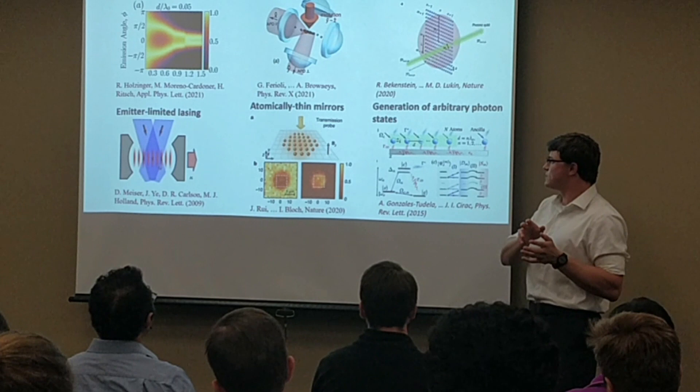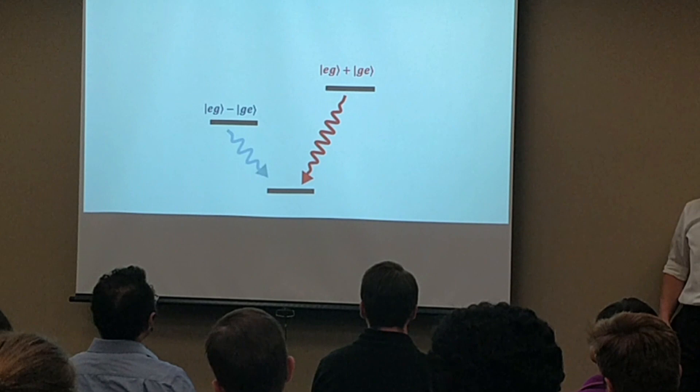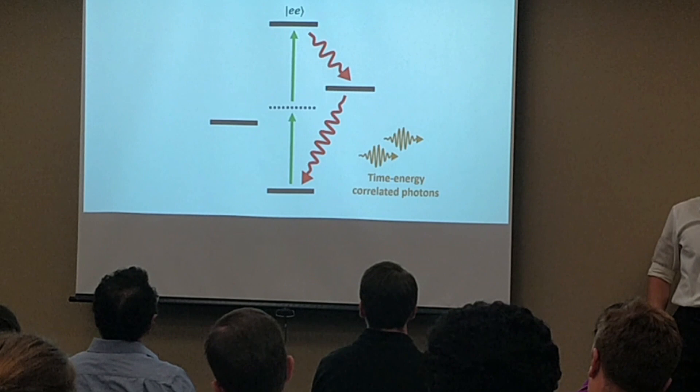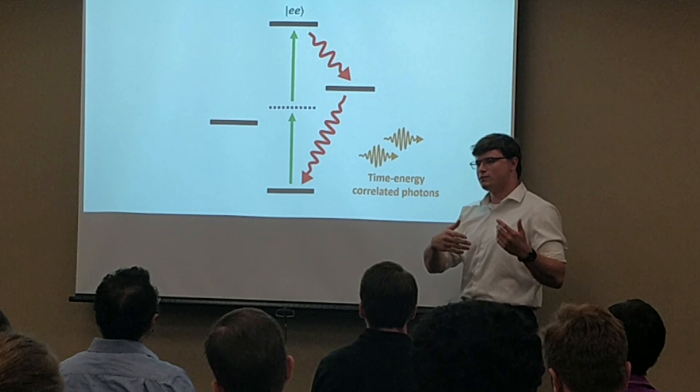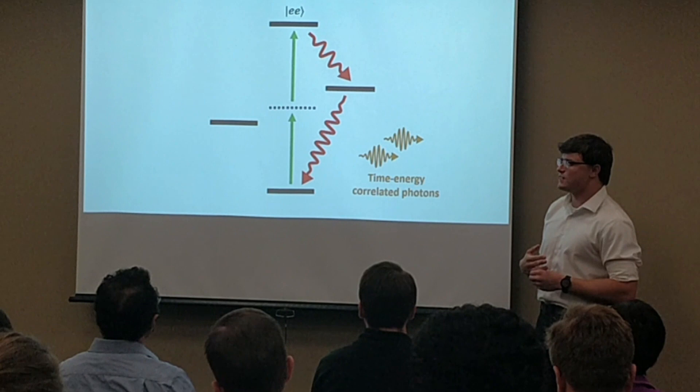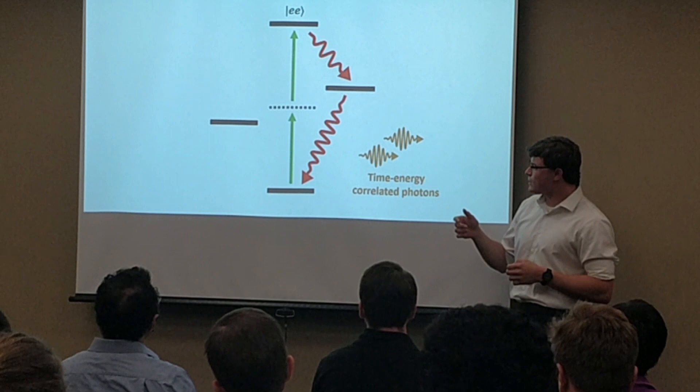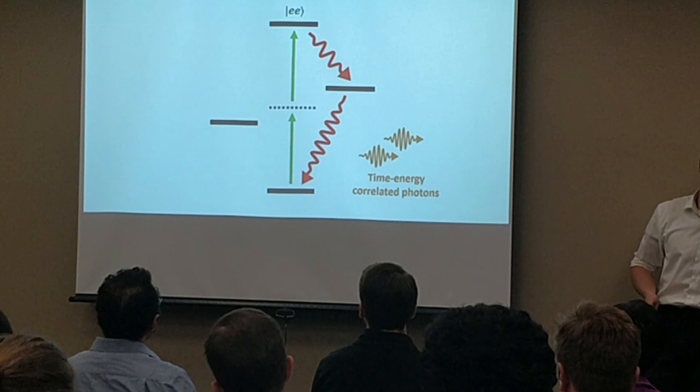Another interesting thing about collective systems is that if you have two single photon emitters coupled together, it opens up a channel for double excitation — where the system absorbs two correlated photons and then releases two correlated photons. This is an entirely different type of quantum light application. Because the photon releases are correlated, the noise of the photons is also correlated, which can result in enhanced sensing properties.